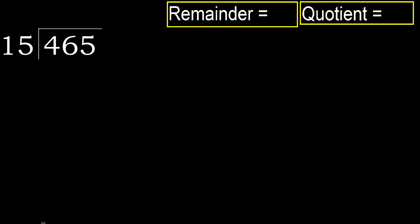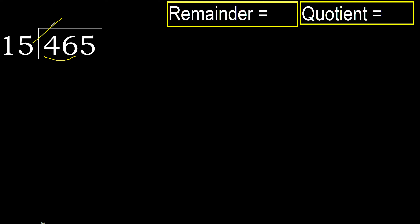465 divided by 15. 4 is less, therefore next. 46 is not less, therefore we work with 46. 15 multiplied by which number is nearest to 46.